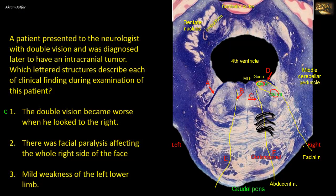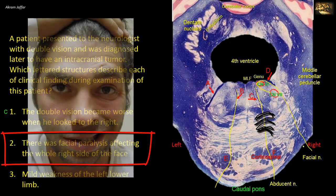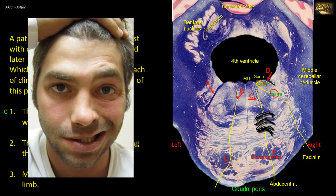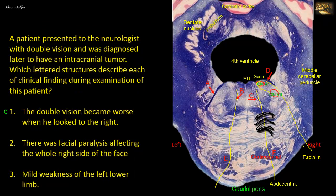The second finding was facial paralysis affecting the whole right side of the face. Muscles of facial expression are supplied by the facial nerve, and paralysis of the whole side of the face — upper and lower — indicates a lower motor neuron lesion affecting either the motor nucleus or the facial nerve itself on the same side. Since the lower motor neuron lesion was on the right side, it was the right facial nerve D that is affected.